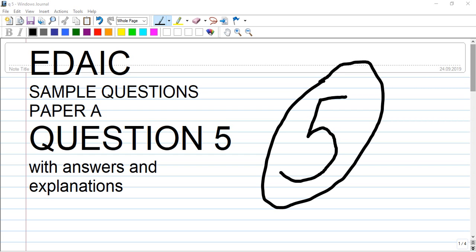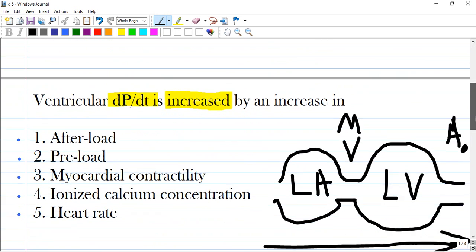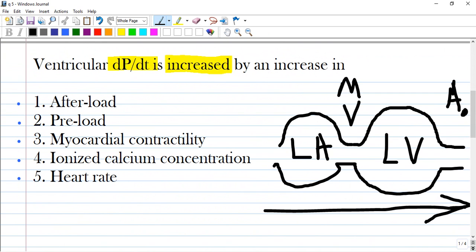Let us get rid of the question condition. Ventricular dP/dt is increased by an increase of the following: afterload, preload, myocardial contractility, ionized calcium concentration, and heart rate. All of these options are correct, and let me explain why.